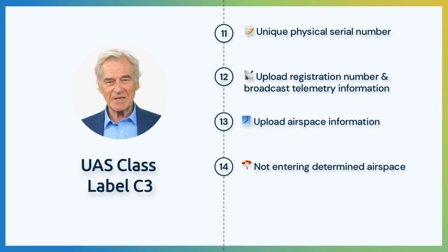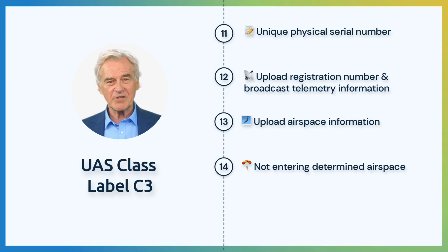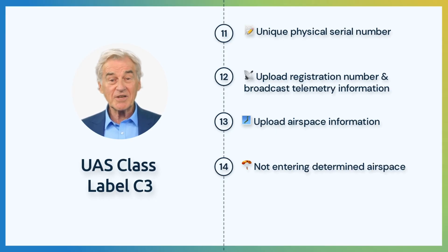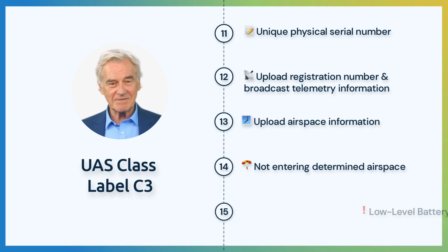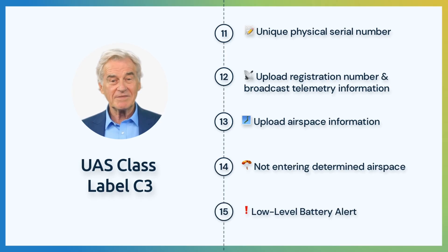Entering determined airspace shall not be possible for the UA. This limit shall be imposed smoothly without adversely affecting the flight operation. Additionally, the UA shall notify the pilot through warnings. When the battery reaches a certain level, the pilot shall be warned by the UA.